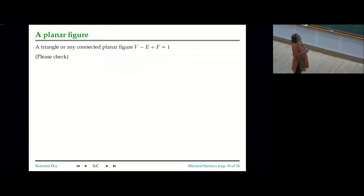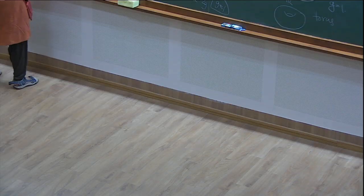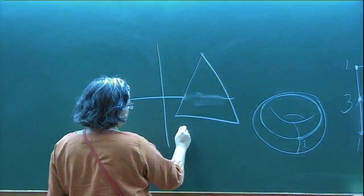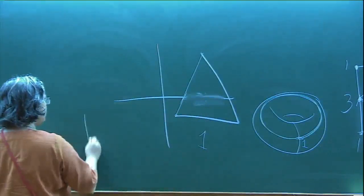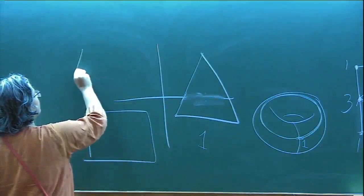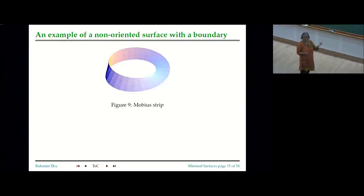Please check that for any triangle or connected planar figure, V − E + F equals 1. On the plane, I have a triangle: just one face, and the number of vertices cancels the number of edges. That is true of any planar figure. Many of these figures, with suitable modifications, come as minimal surfaces — that's why I am introducing them.